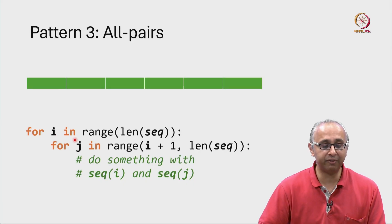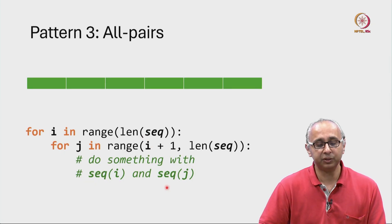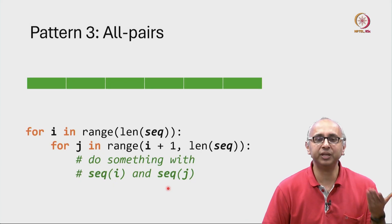So this is the general pattern. For every I, that is a legal index, and then for every J starting at one more than I, do something with the I-eth and J-eth item in that sequence.